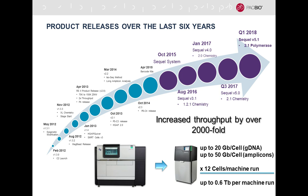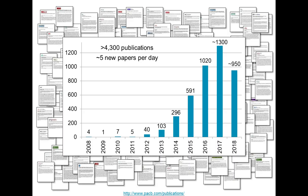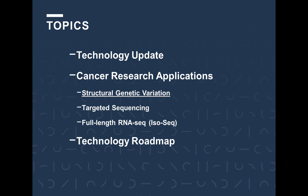We're now reaching a throughput that makes projects previously too slow or cost-prohibitive affordable and timely. Because of these improvements, we've seen steady increases in adoption and publication output. There are well over 4,300 peer-reviewed publications featuring PacBio sequencing across all fields of science — about five new papers published every day on average. With this introduction, I'd like to highlight opportunities in cancer research across the three topics I mentioned, starting with structural genetic variation.